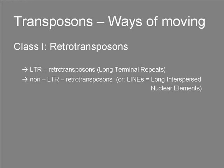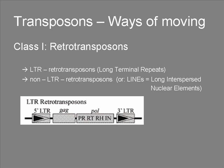We want to look at the different ways in which transposons can move within the genome. We will start with the retrotransposons. The class of retrotransposons must be subdivided into LTR retrotransposons — LTR standing for long terminal repeats — and non-LTR retrotransposons. You can already see in the scheme where the name derives from: on both ends, the element is flanked by long terminal repeats.